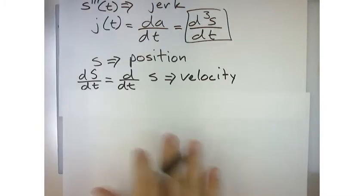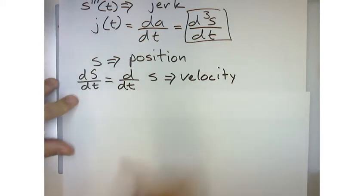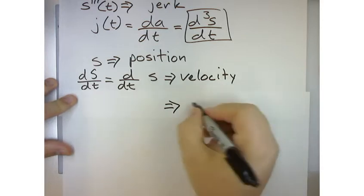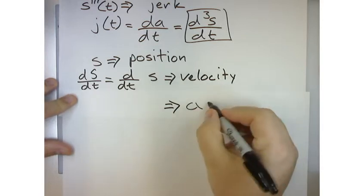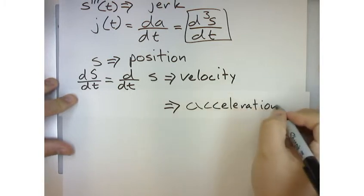Now, so if velocity is ds dt and I wanted to find acceleration, I need to take the derivative of velocity, right? Because that's what acceleration is.